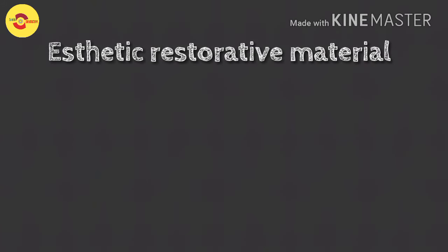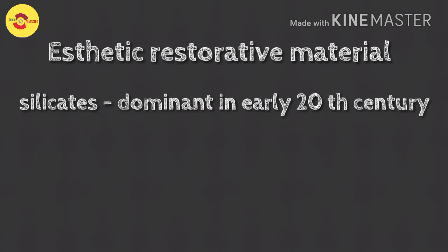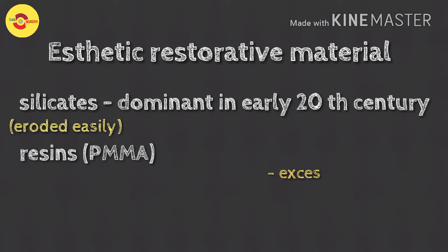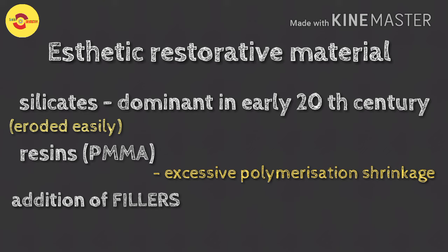Regarding aesthetic restorative materials, silicates were dominantly used in the first half of the 20th century. As silicates severely eroded and had poor wear resistance, they were replaced by acrylic resins, predominantly polymethyl methacrylate (PMMA). However, these showed excessive polymerization shrinkage, thermal expansion and contraction. These problems were countered by addition of quartz powder as fillers, but they were only partly successful.